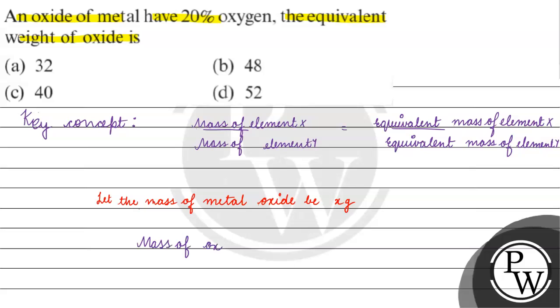Mass of oxygen will be 20% of X, 20 by 100 of X. What can we write? We will simplify this. We can write 1 by 5, X by 5 gram.